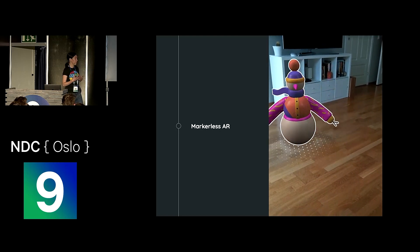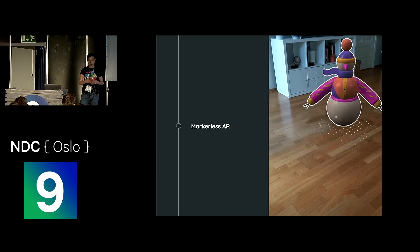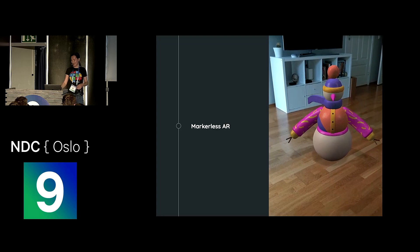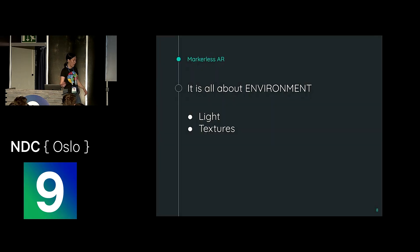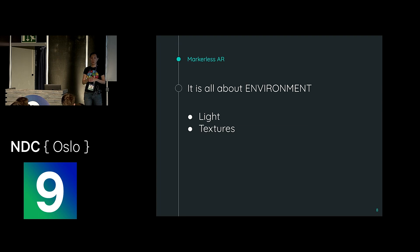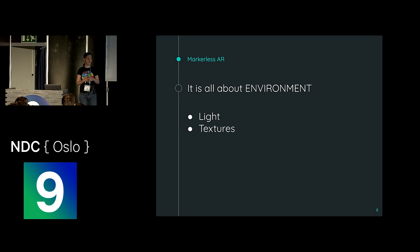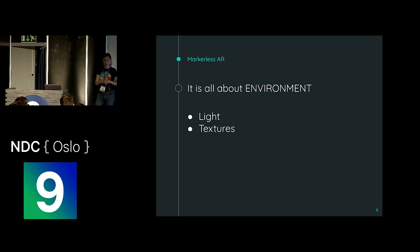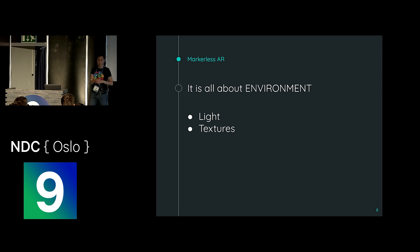When you see a lot of demos in keynotes for AR, everything works fine — everything is stable — and you feel like you're going to do this. But you have to be aware: you need a good environment. Light is very important. AR tracking will not work well if your room is dark or even slightly dim. For example, if a customer wants an AR project in a museum in a dark room, you will probably not be able to do marker-less AR there.